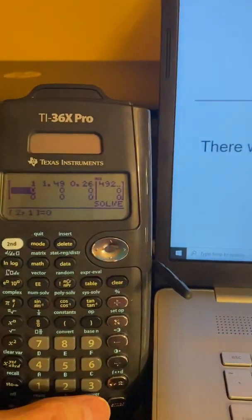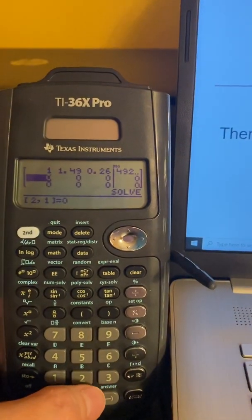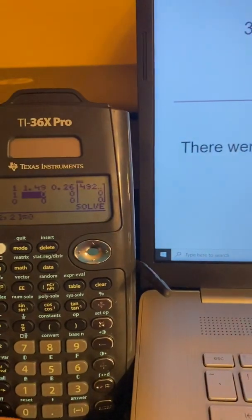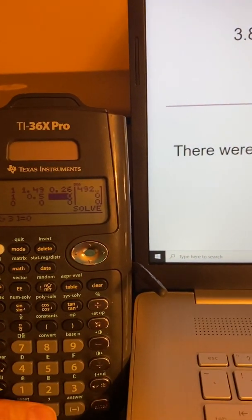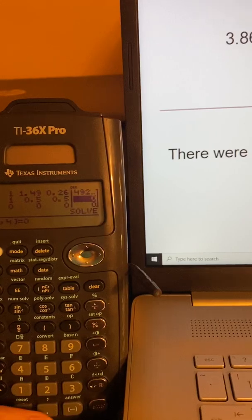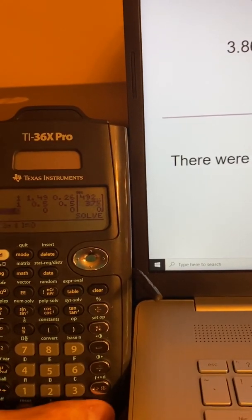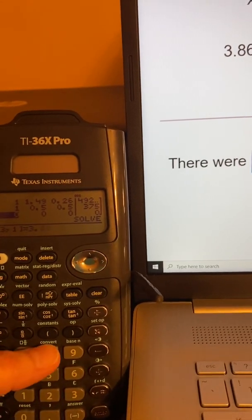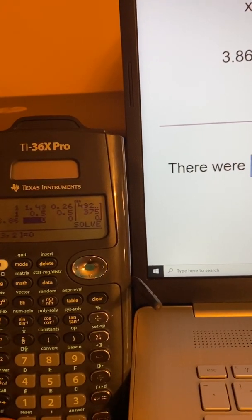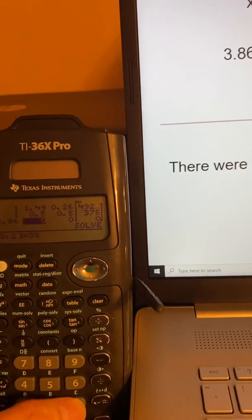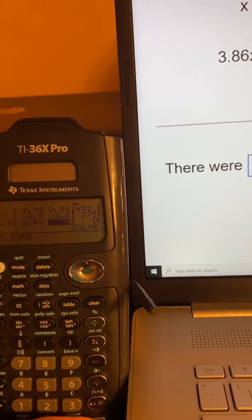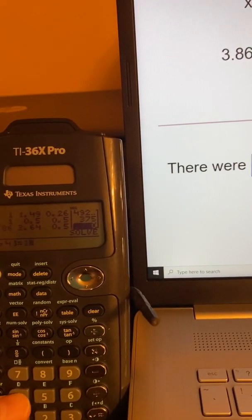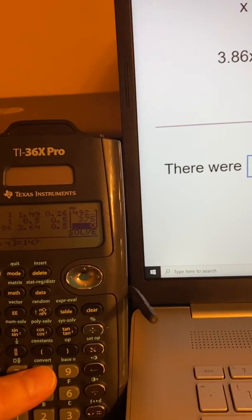So then I'm going to go ahead and fill in the rest of the values. My next term is 0.5, 0.5, 0.75. And then I have in the last equation, my coefficient of x is 3.86, then 3.64, 0.5, and 1,478.